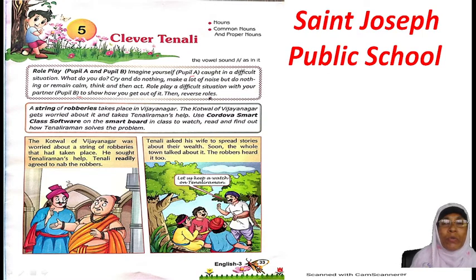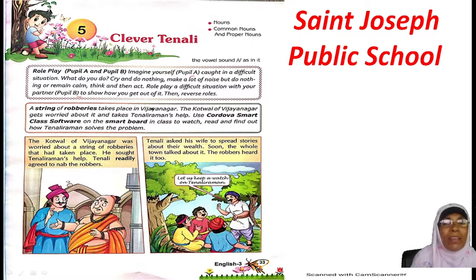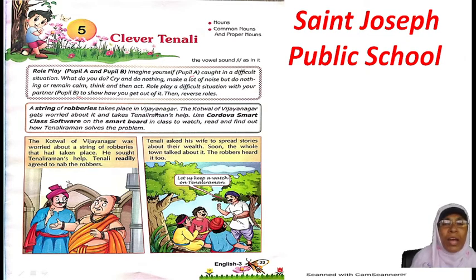Then reverse the roles. Now let us see the second box on this page. A string of robberies takes place in Vijayanagar. 'String of robberies' means one after another — houses were being robbed. The Kotwal of Vijayanagar gets worried about it and takes Tenali Rama's help.